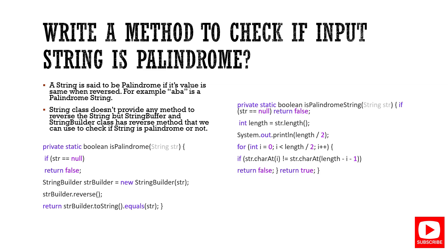Next question: write a method to check if the input string is a palindrome or not. In almost all interview questions you will see this. A palindrome means that when you reverse a string, it represents the same value. We can use two approaches: one using the built-in reverse method with StringBuilder, and another without any built-in method by using a for loop and iterating with the string's length.